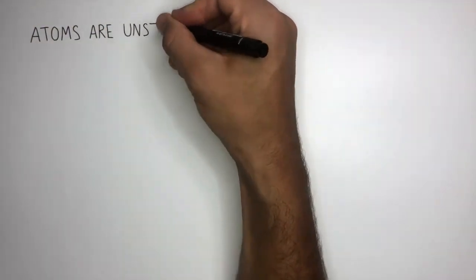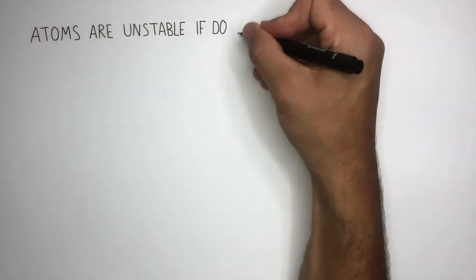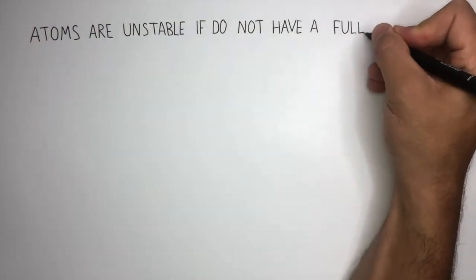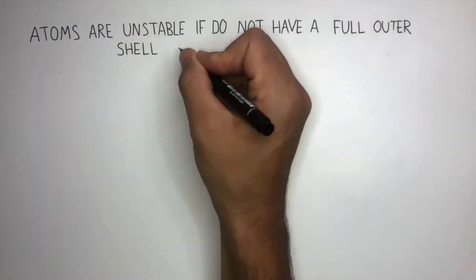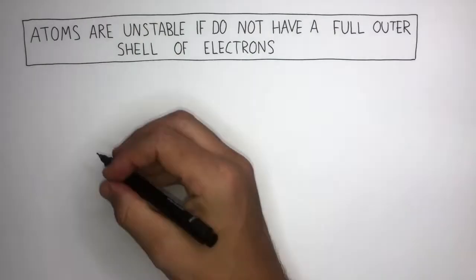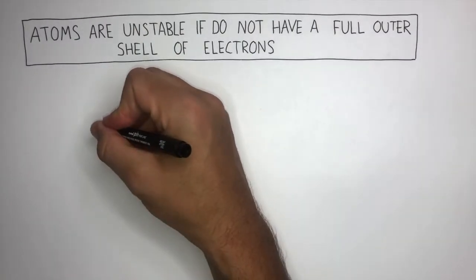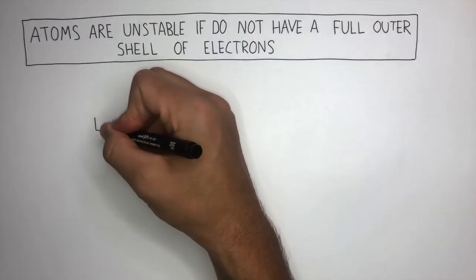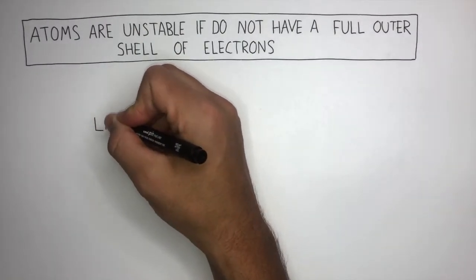Atoms are unstable if they do not have a full outer shell of electrons. Let's look at the atomic structure of lithium.